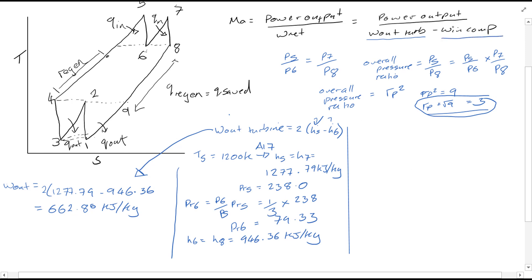Now we're interested in finding W in, the work in by the compressors. So W in comp is equal to 2 bracket h2 minus h1. T1 was given equal to 300 Kelvin. Therefore, using table A17, you'll find h1, which is also equal to h3 from looking at the diagram, it's equal to 300.19 kilojoules per kg. Similarly, while we're here, PR1 is equal to 1.3860.